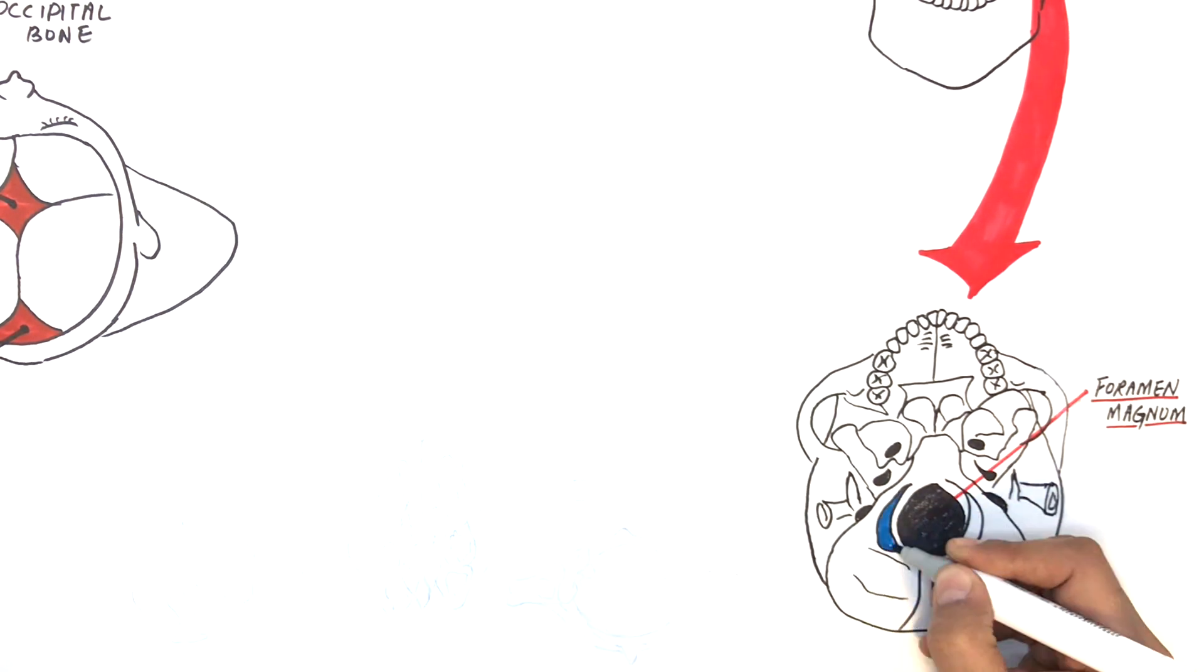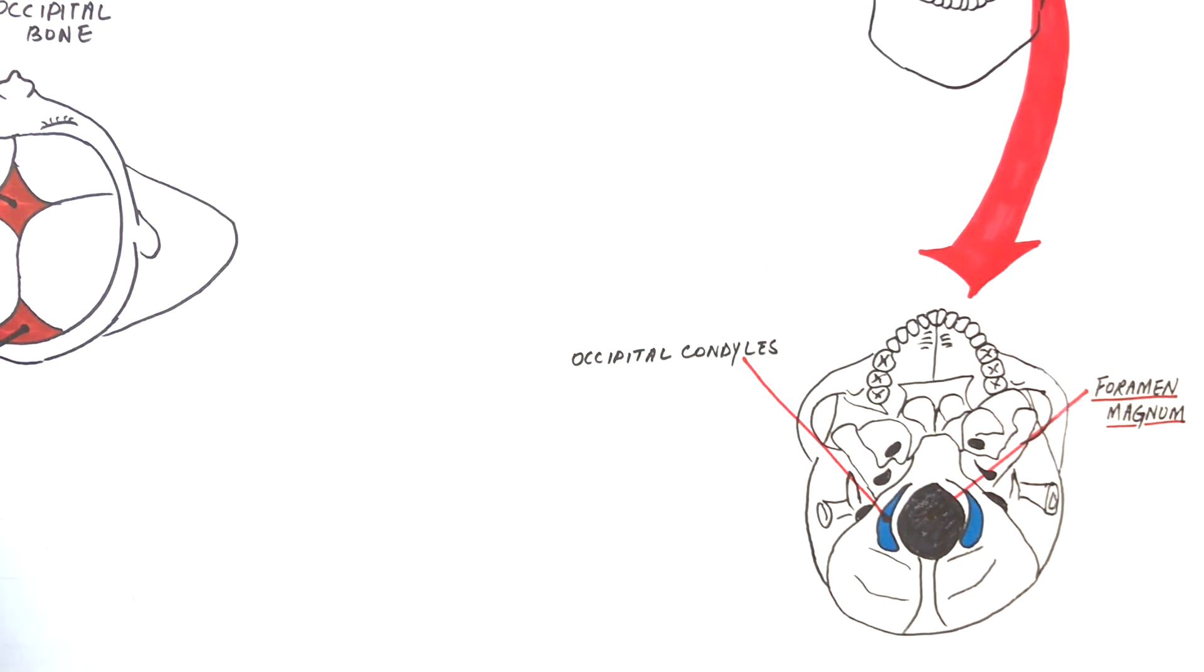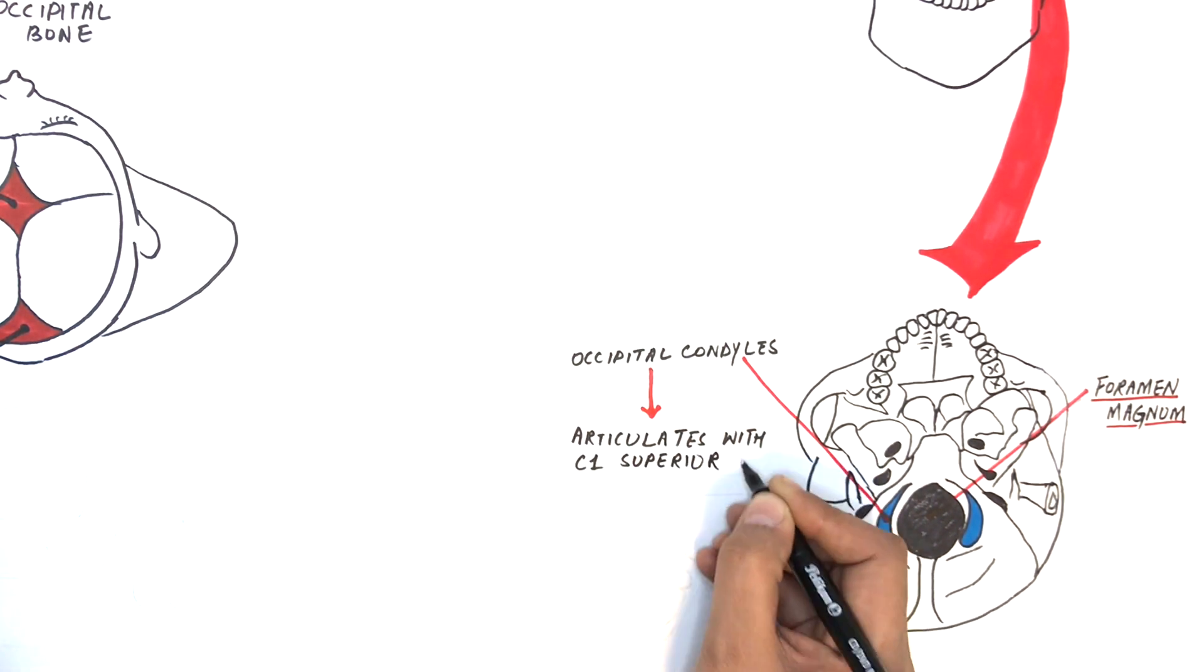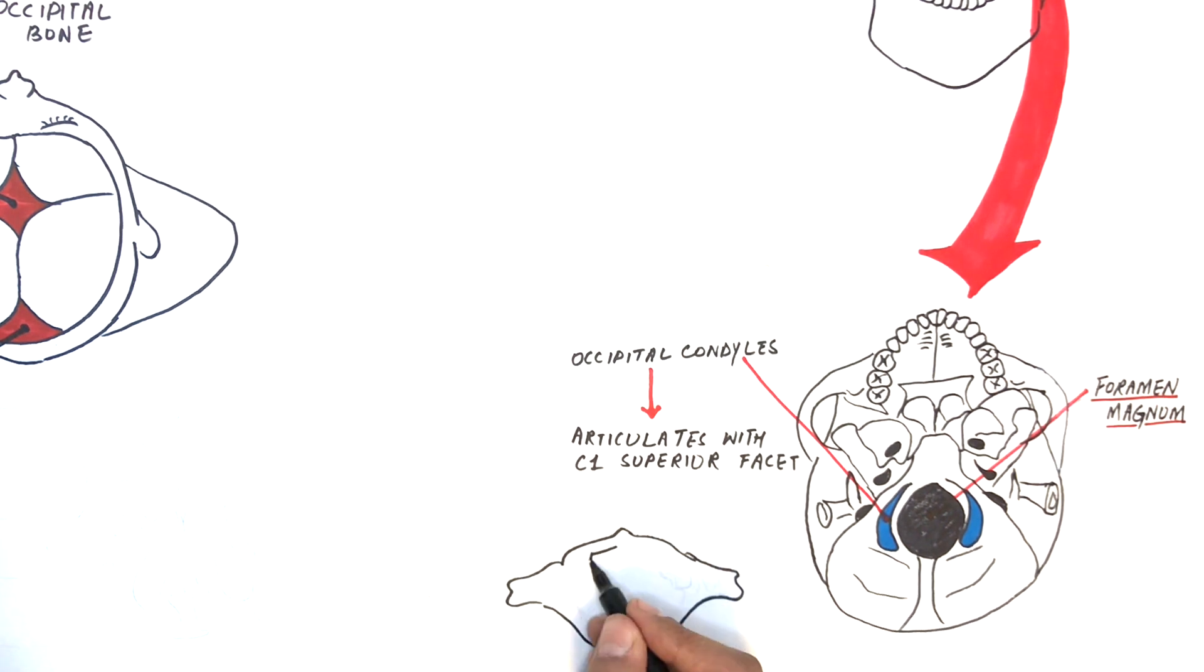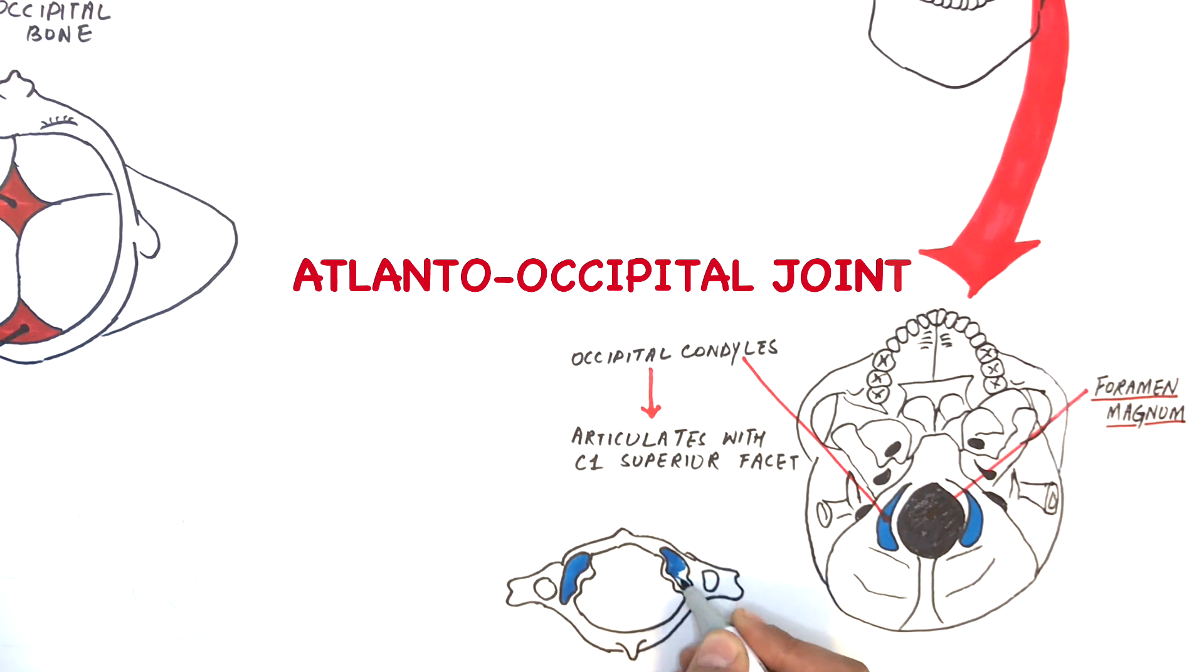Foramen magnum is the greatest foramen of the skull, through which passes the spinal cord along with vertebral arteries. Lateral to the foramen magnum are located the two occipital condyles. Condyle means a bony prominence which usually attaches with another bone and forms a joint. In case of the occipital condyles, it joins with the superior facet of the first cervical vertebra called atlas, forming the atlanto-occipital joint.